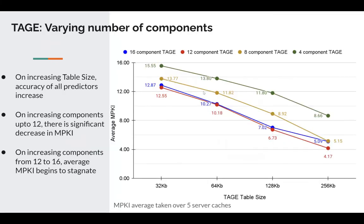We varied the number of components for the TAGE predictor and also varied the TAGE table size, which is the size of the entire table summed across all components. Naturally, increasing the table size also increases the maximum history length and captures a richer history, so increasing table size improves prediction accuracy and average MPKI goes down. We see that increasing components from 4 to 8 and from 8 to 12 yields a significant improvement in accuracy and mispredictions decrease substantially.